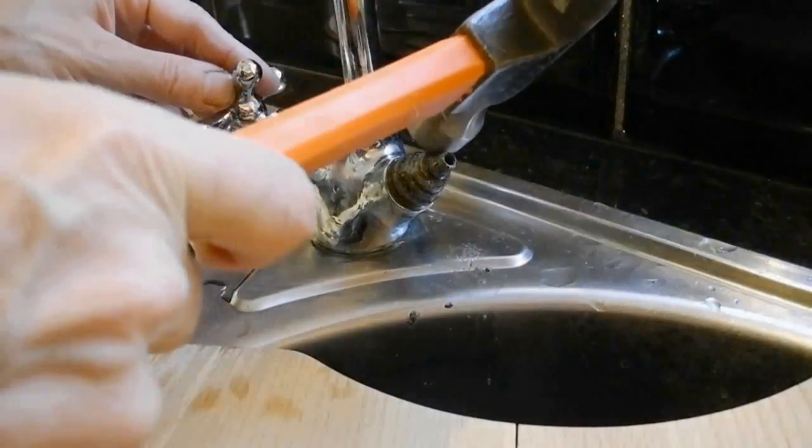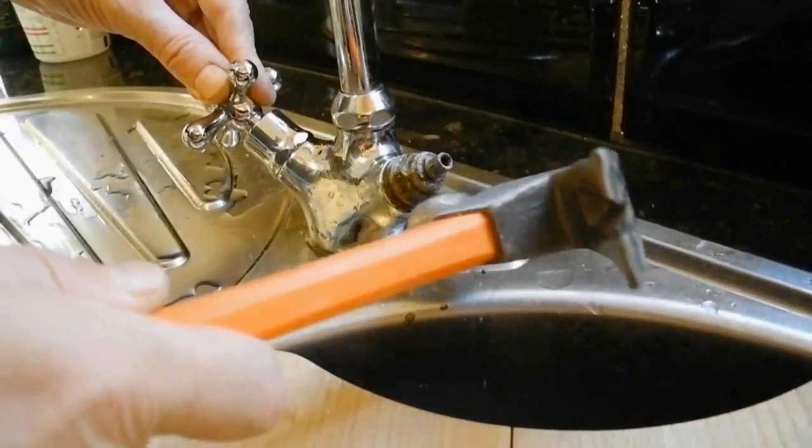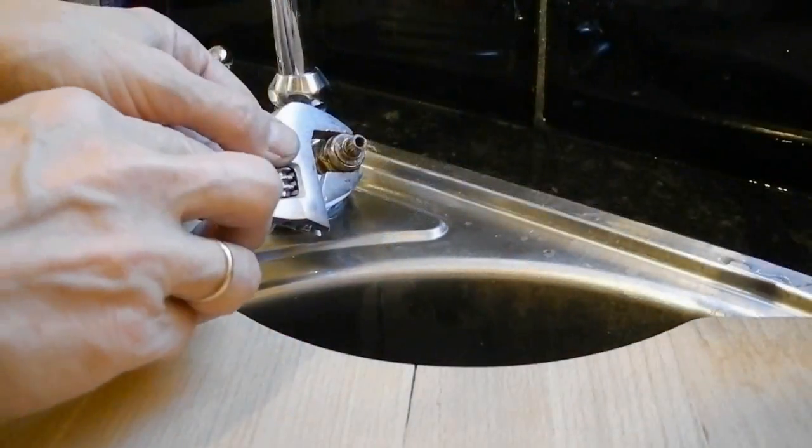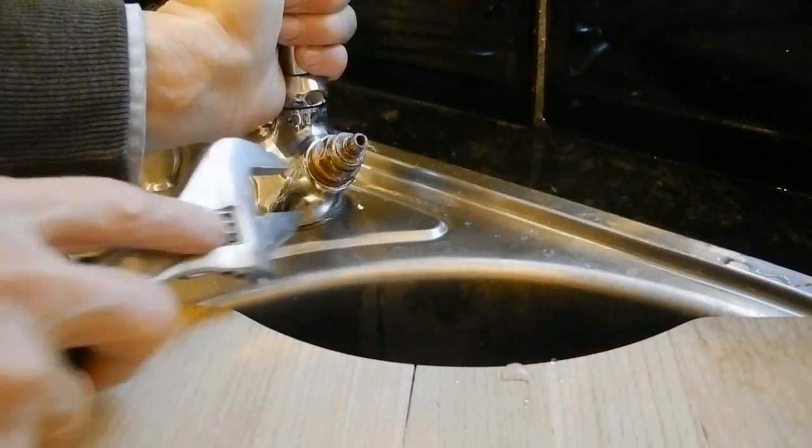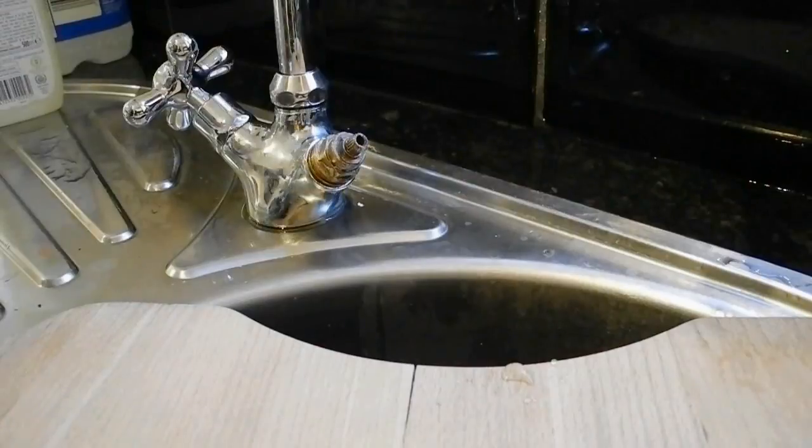Unfortunately we couldn't do it, and that's why we hammer it a little bit, just to crack the lime scale between the cartridge and the tap. And now we could take it out.